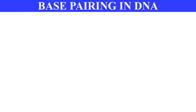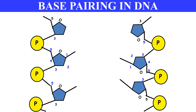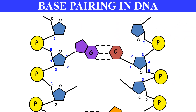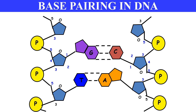Now the base pairing in DNA. There is base pairing between adenine and thymine, and cytosine and guanine. The difference is in the number of hydrogen bonds: in the case of guanine and cytosine there are three bonds, while in the case of thymine and adenine base pairing there are only two bonds between them.